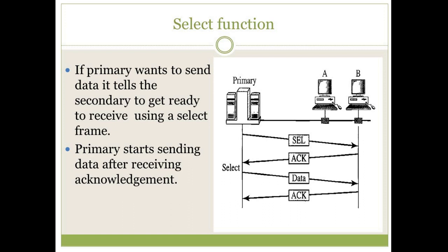So, the primary must have received data from some other station and is forwarding it to B. To explain again: if the primary has some data for B, where B is the receiver, it will not send the data directly. It will first send a select message to B. If B is ready to receive, it will send an acknowledgement. Then primary will start transferring the data. When the data is received by B successfully, B will again send an acknowledgement, and in this way the primary will know that the data was received by B.